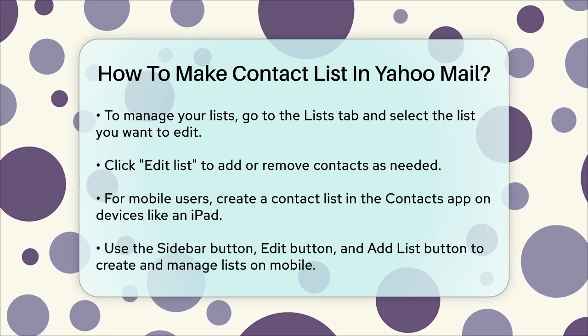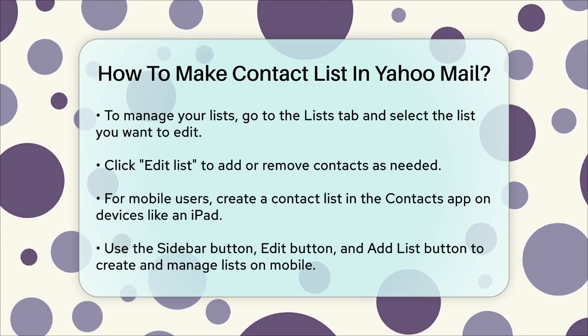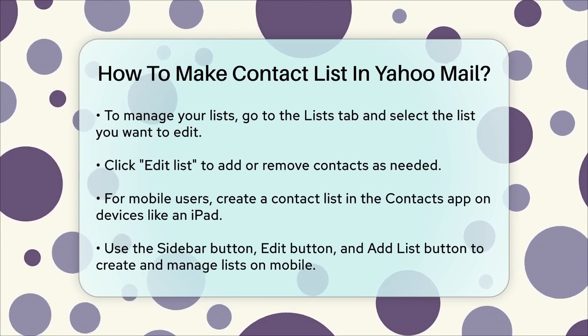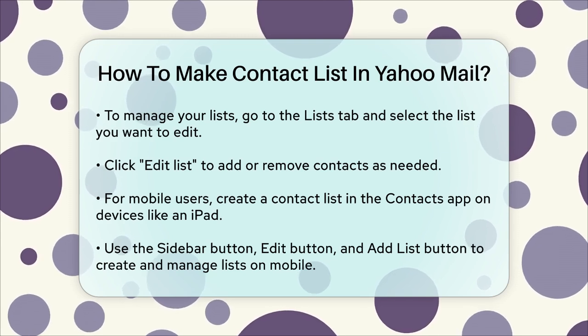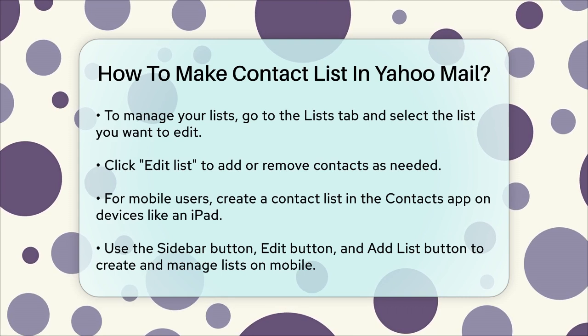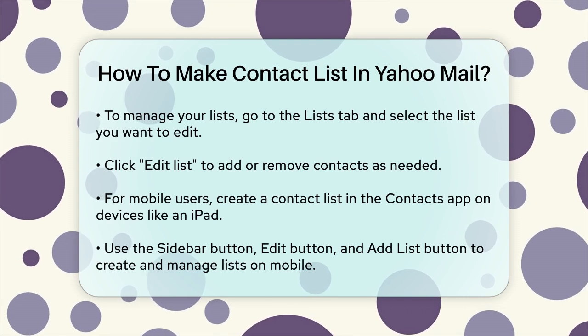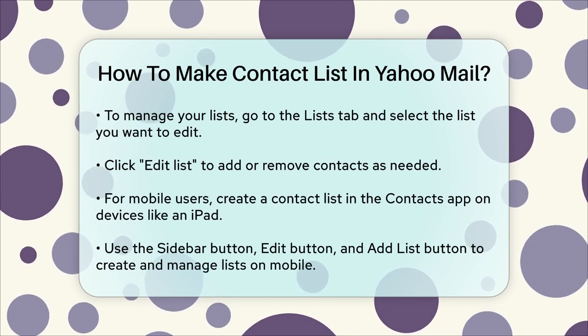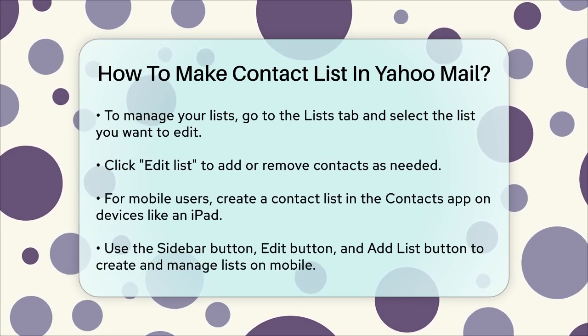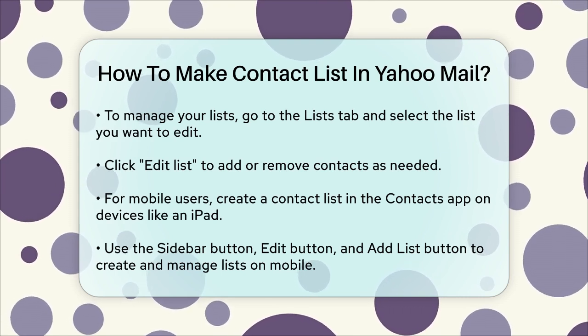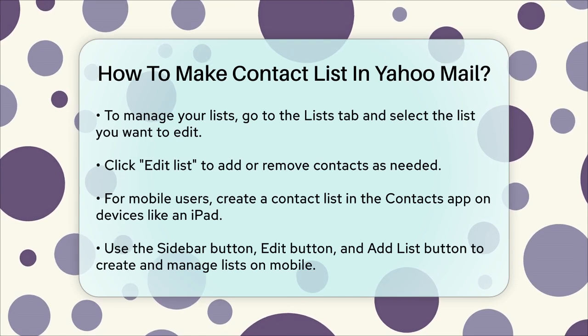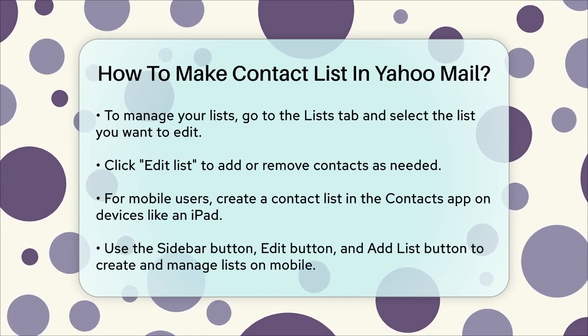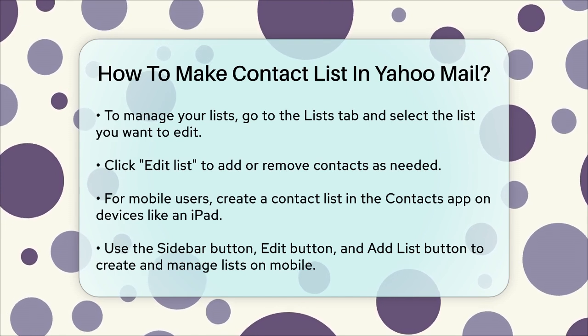Tap the Sidebar button, then the Edit button at the top of the sidebar, and finally the Add List button at the bottom left. Name your list, add contacts, and you're good to go.